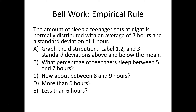Let's read through this together, and if you want to pause the video and give it a shot, you can. The amount of sleep a teenager gets at night is normally distributed with an average of 7 hours and a standard deviation of 1 hour, so they're giving us our mu and our sigma. First, I want us to graph the distribution and label 1, 2, and 3 standard deviations below the mean, and then find what percentage of teenagers sleep between 5 and 7 hours, between 8 and 9, more than 6, or less than 6.